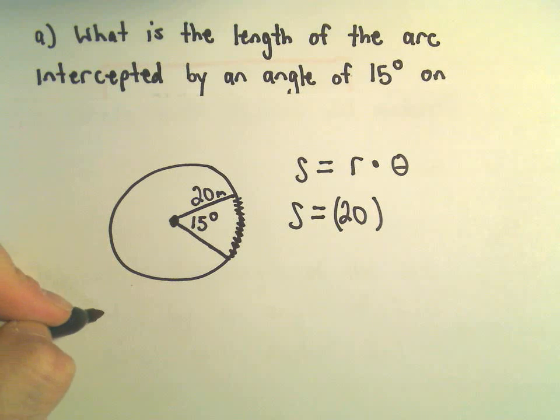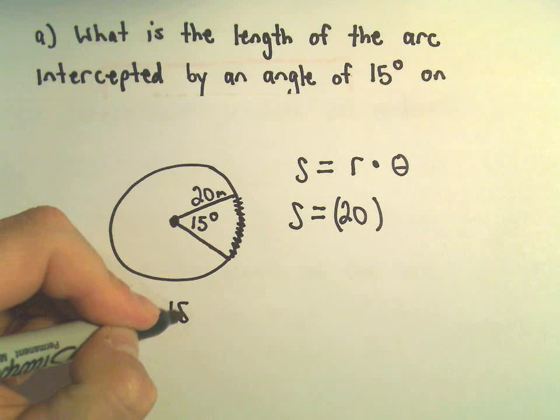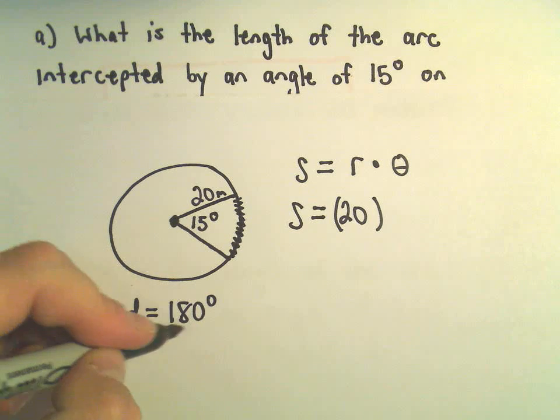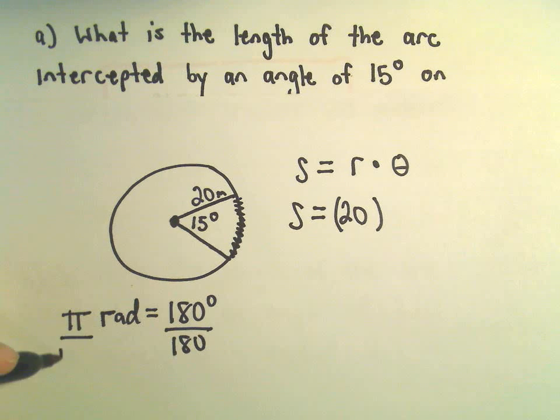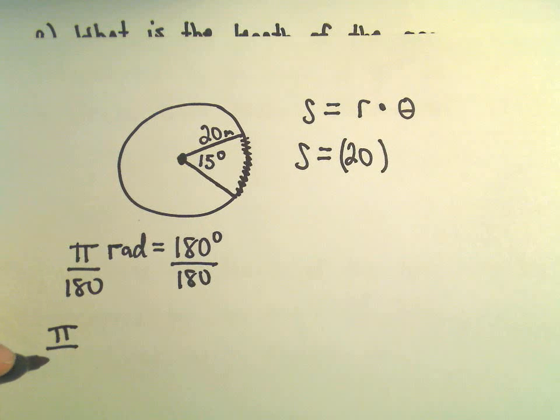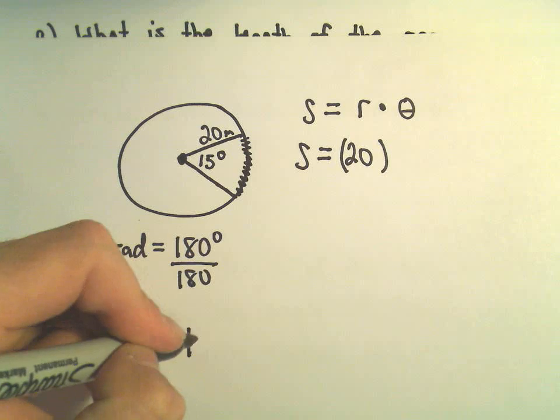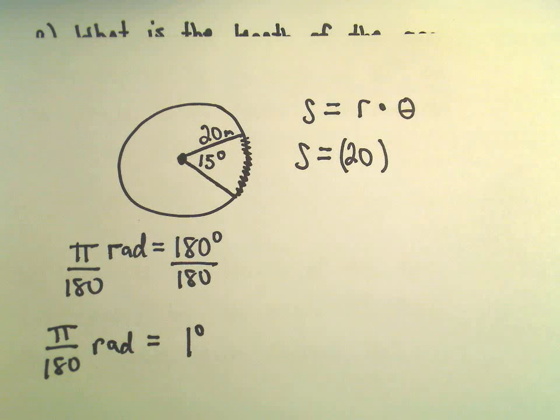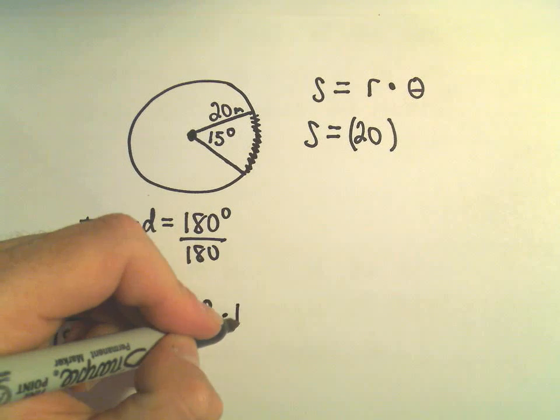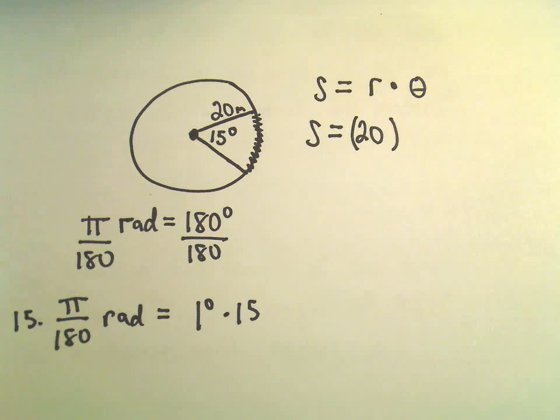So, let's see, we know that pi radians is equal to 180 degrees, so if we divide by 180 by 180, we'll get pi over 180 radians equals 1 degree. But now I'm simply going to multiply both sides by 15.